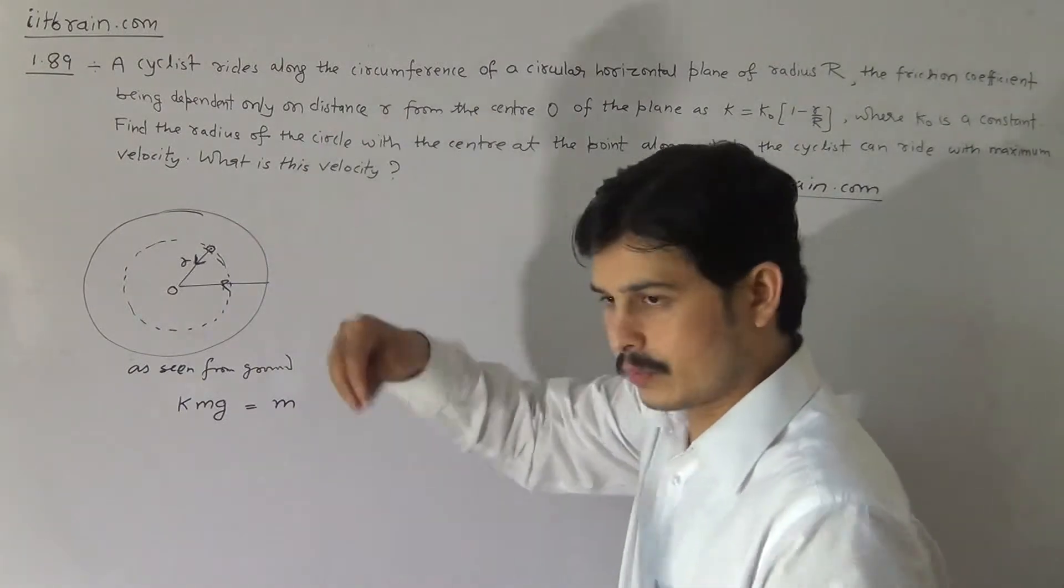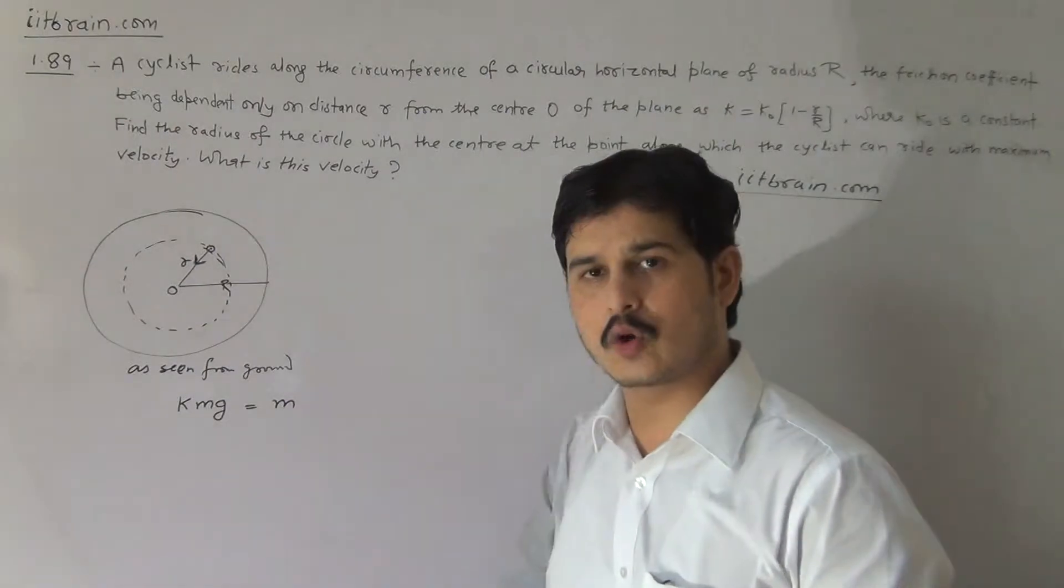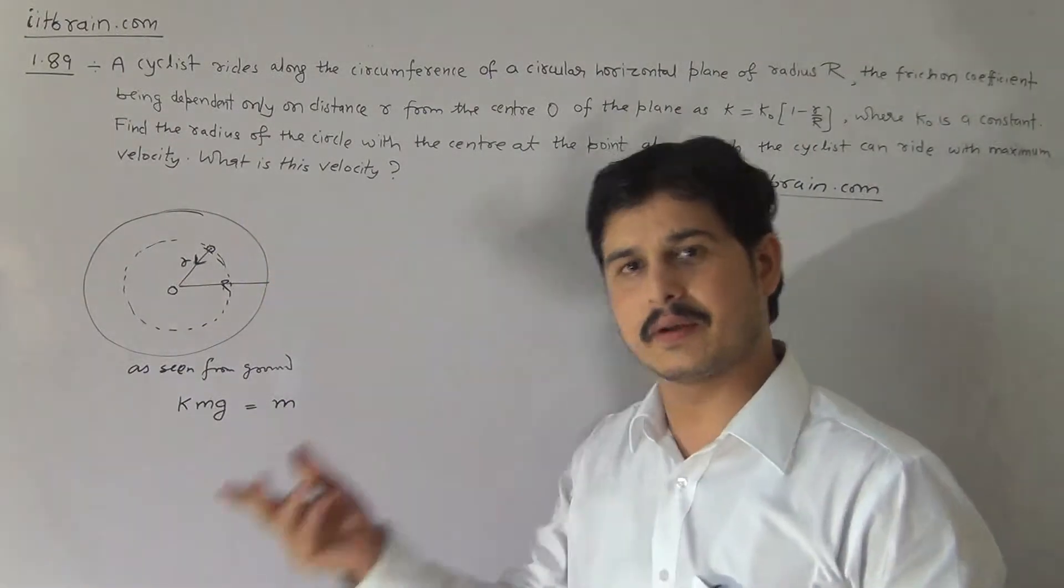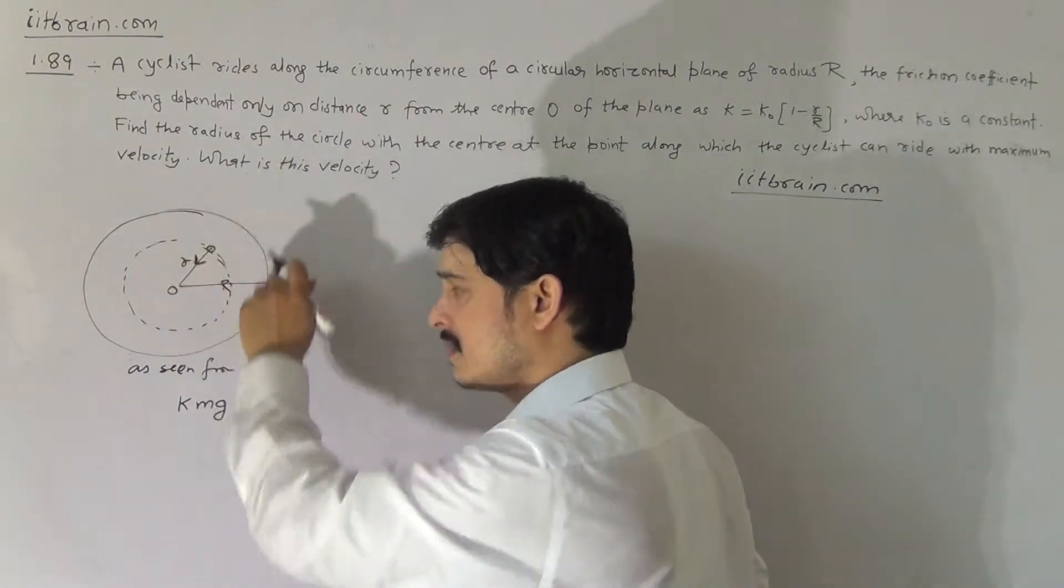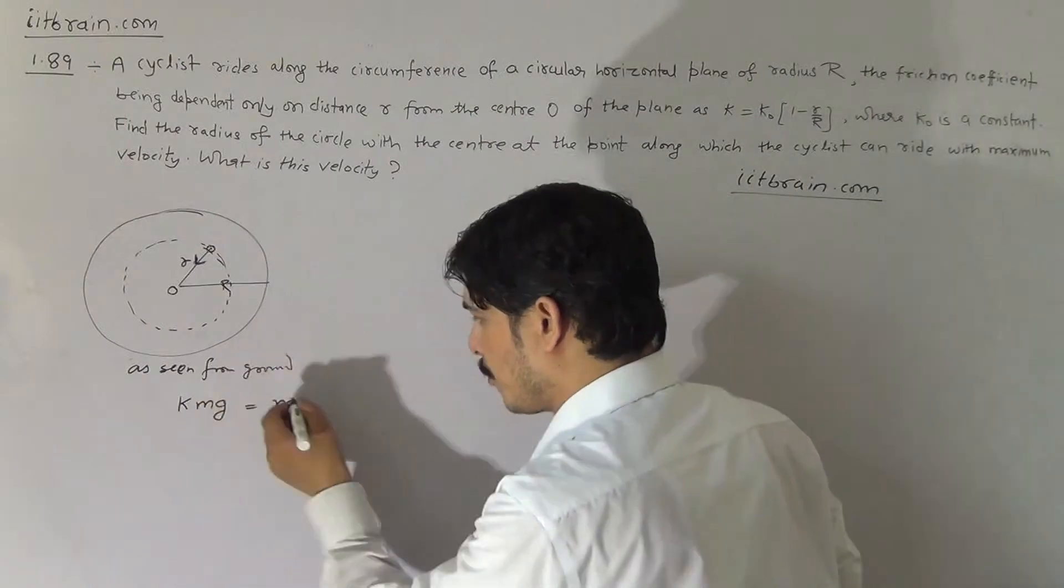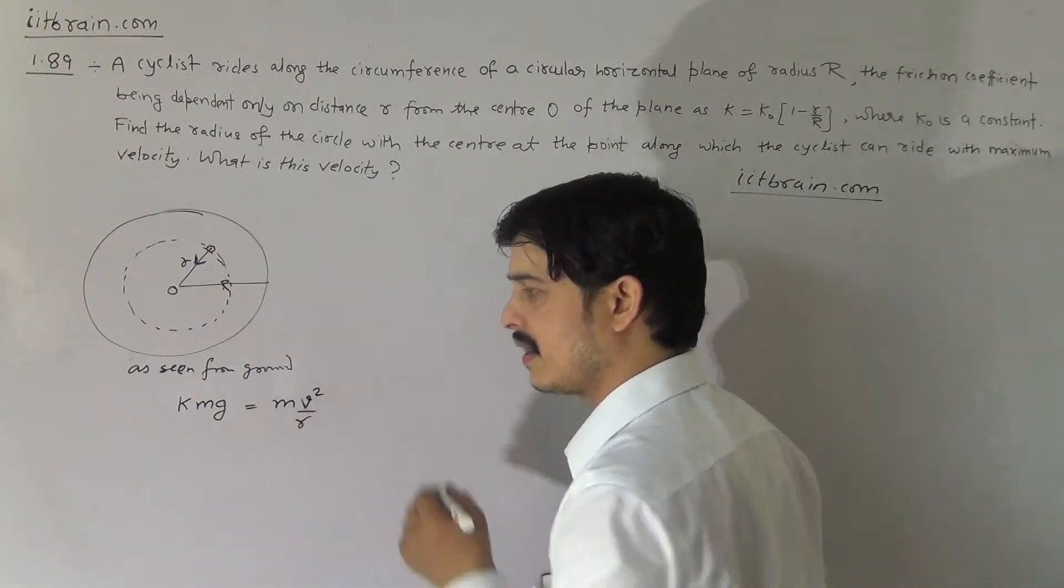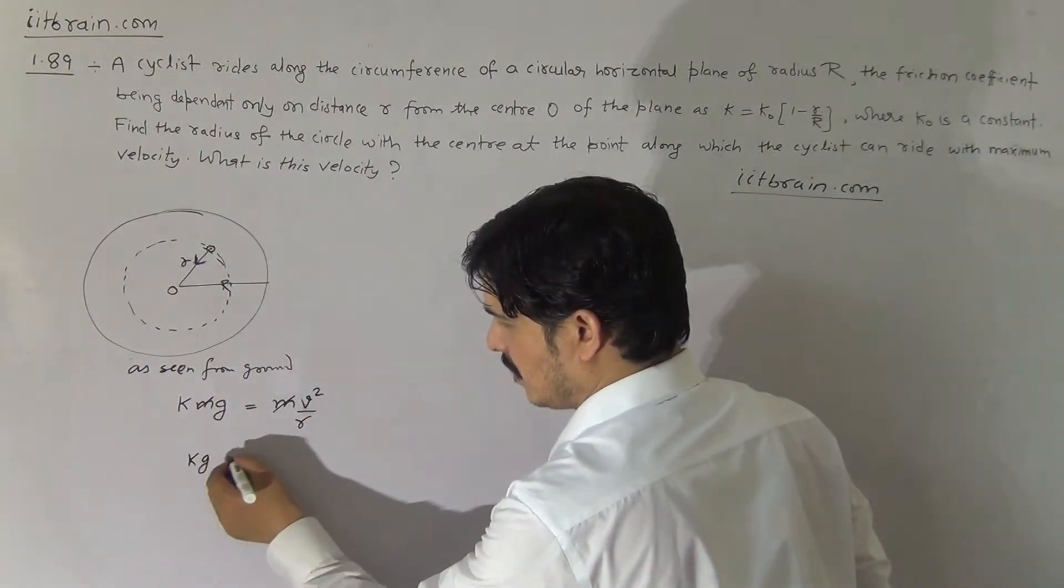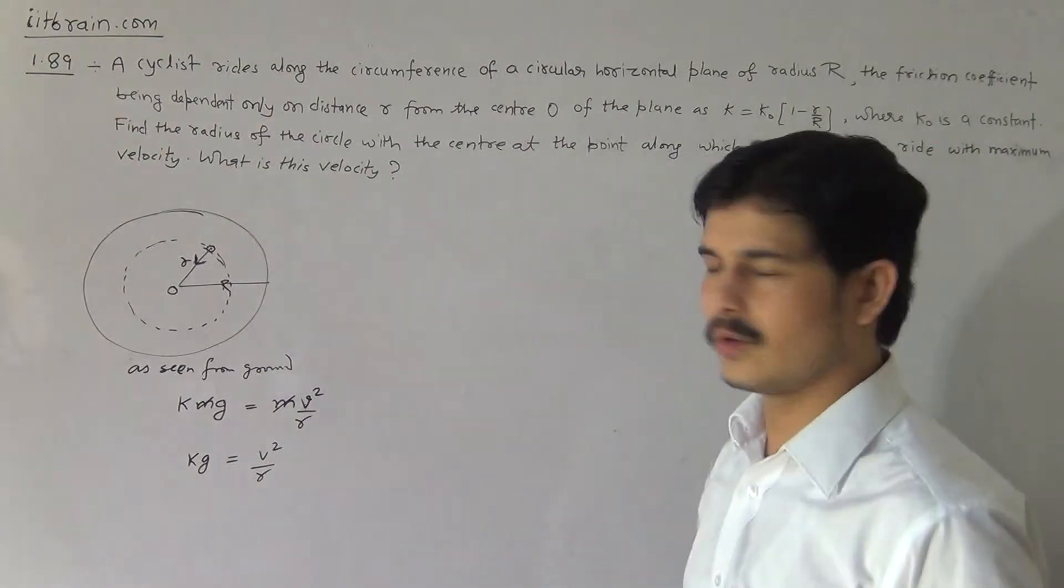The weight of the cyclist is mg downward, and since this mg is equivalent to the normal reaction, the friction, which will be kN, can be written as kmg. So this kmg is the force of friction in this path, and this will provide the necessary mass into acceleration. Acceleration can be written as v square by r, so kg will be equal to mv square by r, and kg equal to v square by r. This is the equation for its acceleration.